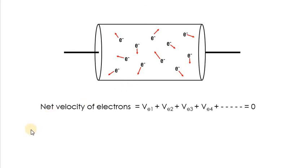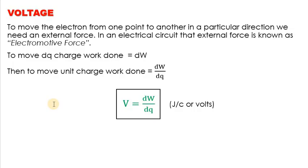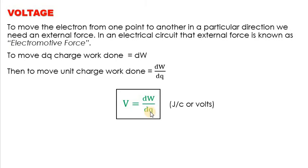To make current flow we need to apply a voltage. To move an electron from one point to another in a particular direction we need an external force, called electromotive force in electric circuits. If we move a dq charge and the work done is dw, then the work done to move a unit charge is dw/dq — and this dw/dq is called the voltage. So V = dw/dq, and the unit is joules per coulomb, or simply volts.